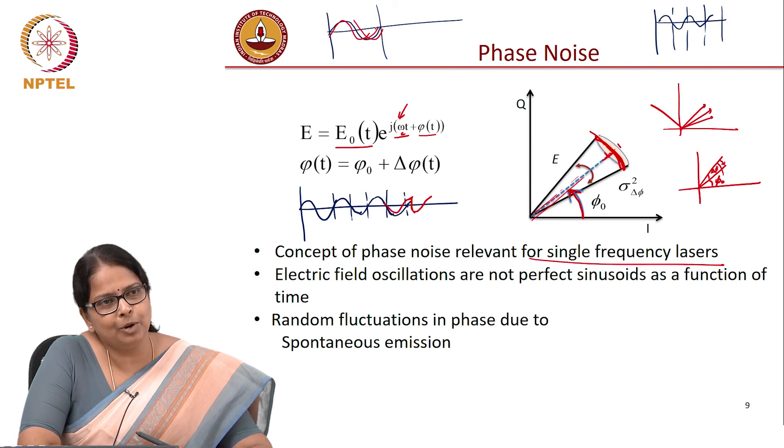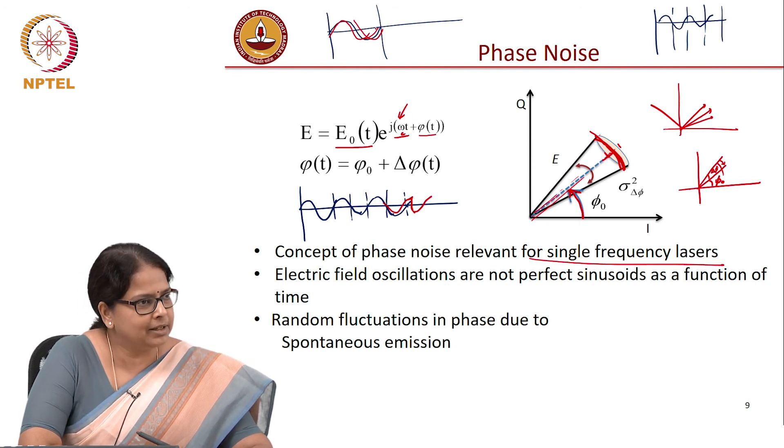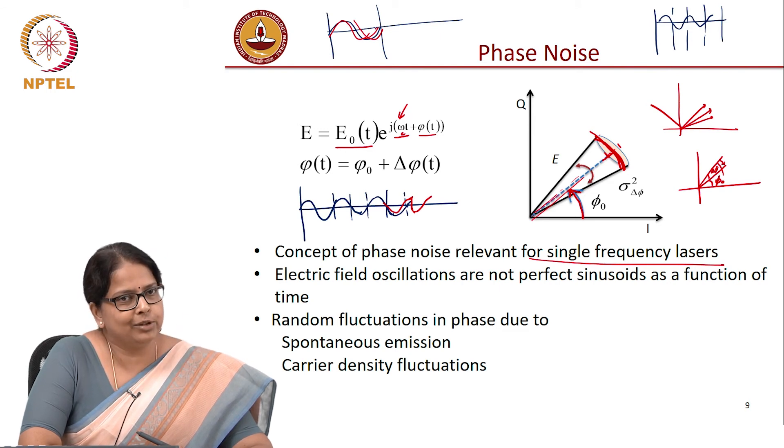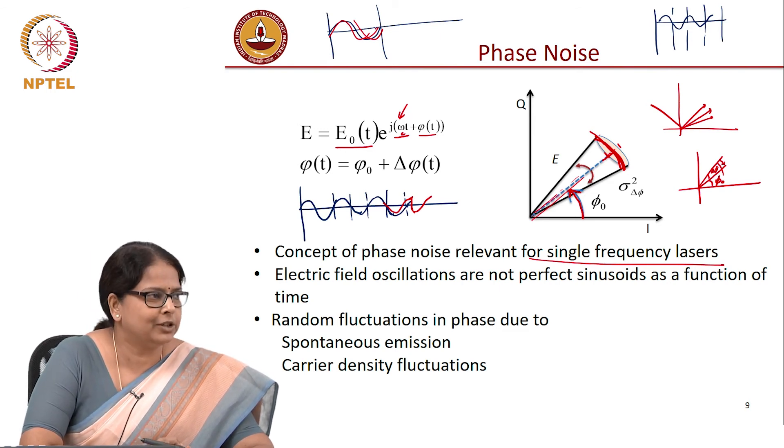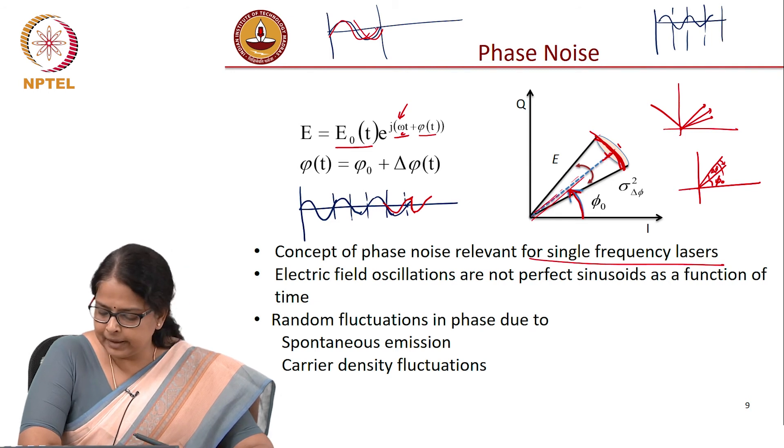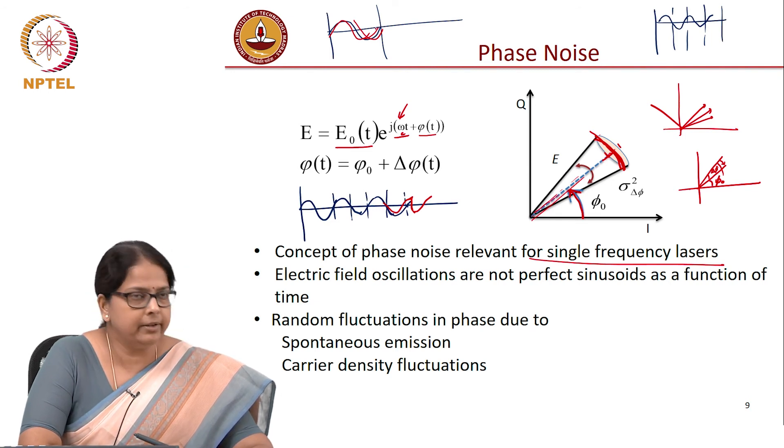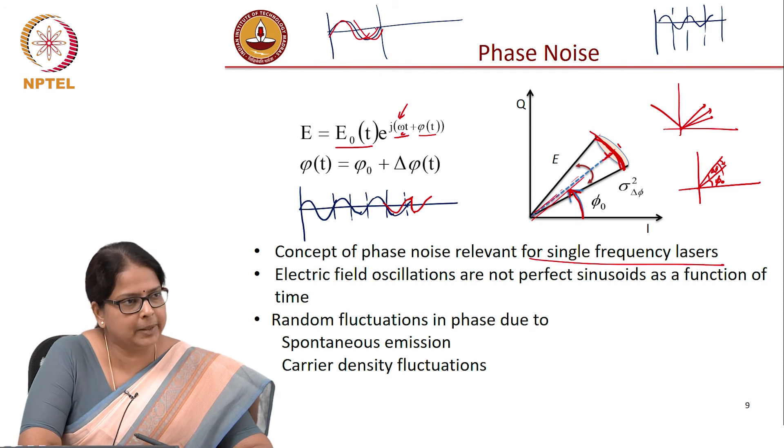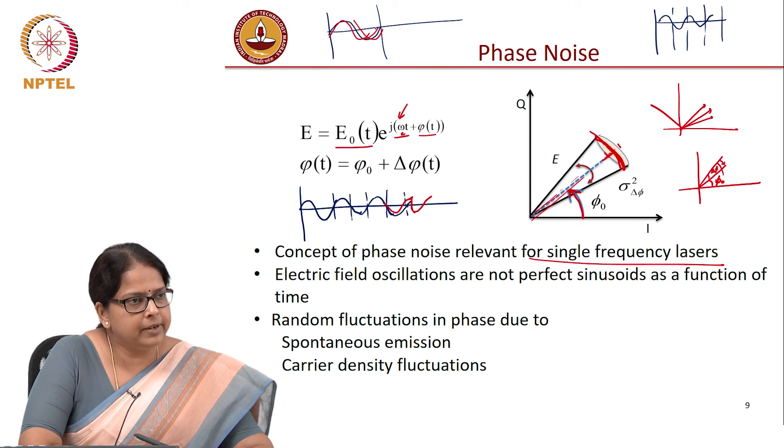Again, spontaneous emission. Spontaneous emission does not preserve phase. It will come at random phases and there could be carrier density fluctuations. So, the reasons for intensity noise and phase noise are actually the same, but now we need to see how to quantify this phase noise. Intensity noise we quantified with respect to the RIN and the RIN spectrum. How do you quantify phase noise?